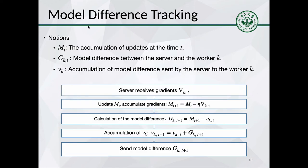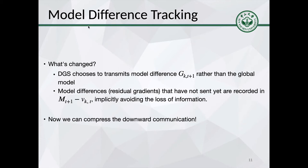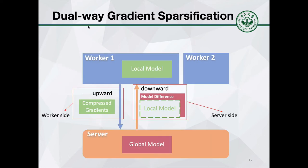First, the server-side applies model difference tracking mechanism to downward communication, which allows us to sparsify the downward communication. In async SGD, to update local parameters, a worker will receive the global model from the server and replace the local model with the global model. However, DGS chooses to transmit model difference rather than the global model, and the model difference can be sparsely compressed. With the model difference tracking mechanism, we can compress the downward communication.